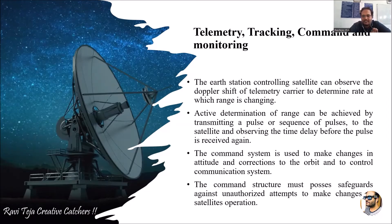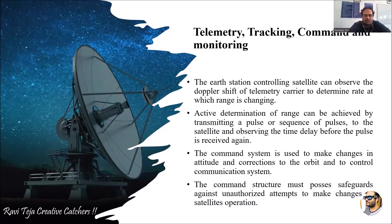The command system is used to make changes in attitude and corrections to the orbit, and to control the communication system. If necessary, it makes changes in the attitude as well as corrections to the orbit — for example, if the satellite is not moving properly in its orbit due to external forces acting on it causing it to deviate. Using the attitude correction system and the attitude processor unit present in the earth station, the motion of the satellite can be altered so it continues moving in the correct orbit.